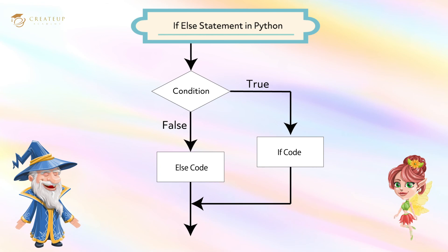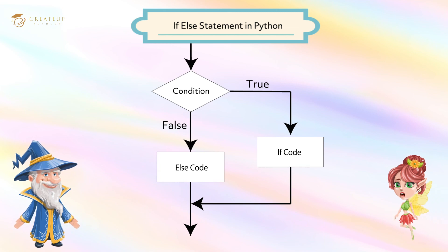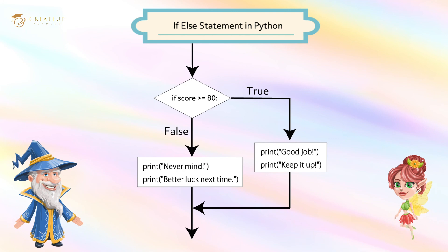If-else statement in Python. How can I write a process when the conditions are not met? In that case, let's use the if-else statement. Let's make a program that displays "never mind, better luck next time" when the score is lower than 80 points.